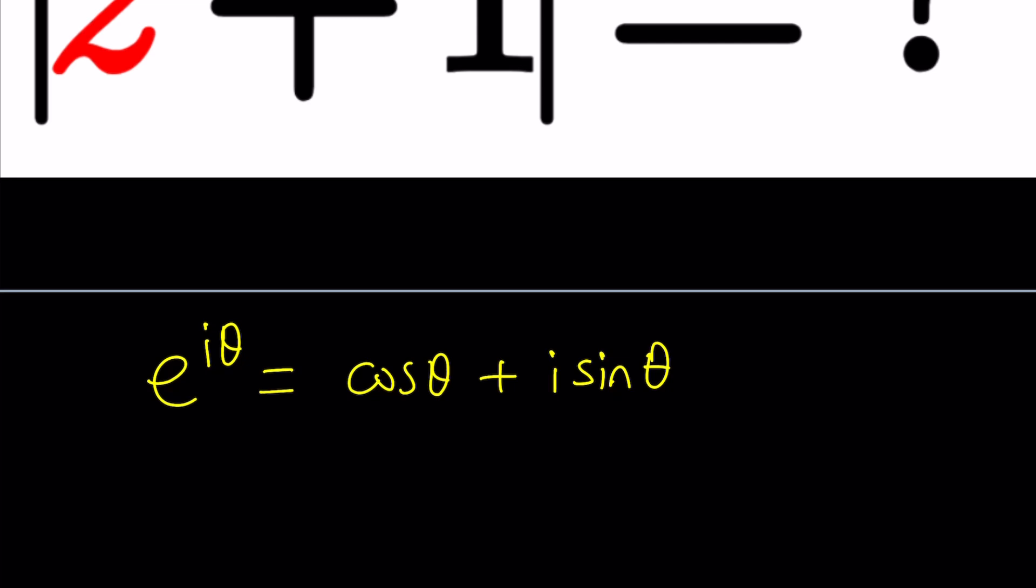It is cosine theta plus i sine theta. All right. So this is called Euler's formula and it's just amazing. It's from Euler right? So it kind of gives us a really cool relationship between an exponential and a complex or imaginary number and trigonometry. Beautiful connection.